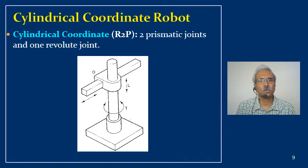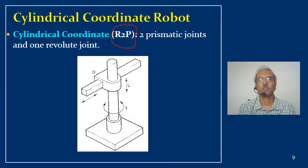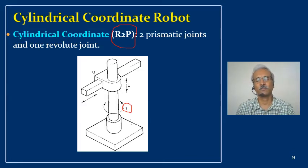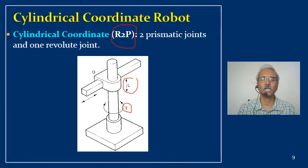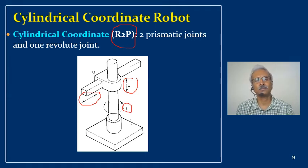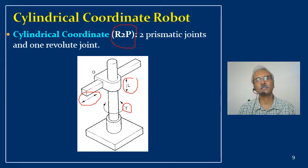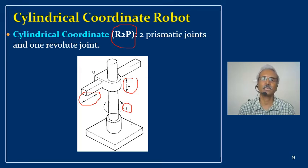Next is the cylindrical coordinate robot, with configuration R-2P — one rotary joint and two prismatic joints. The base has a rotary joint (notated as T, to be explained later), one linear joint moving up and down, and one more linear joint moving horizontally. The name 'cylindrical' comes from the circular path of the base rotation combined with the linear joints, producing a cylindrical work volume.